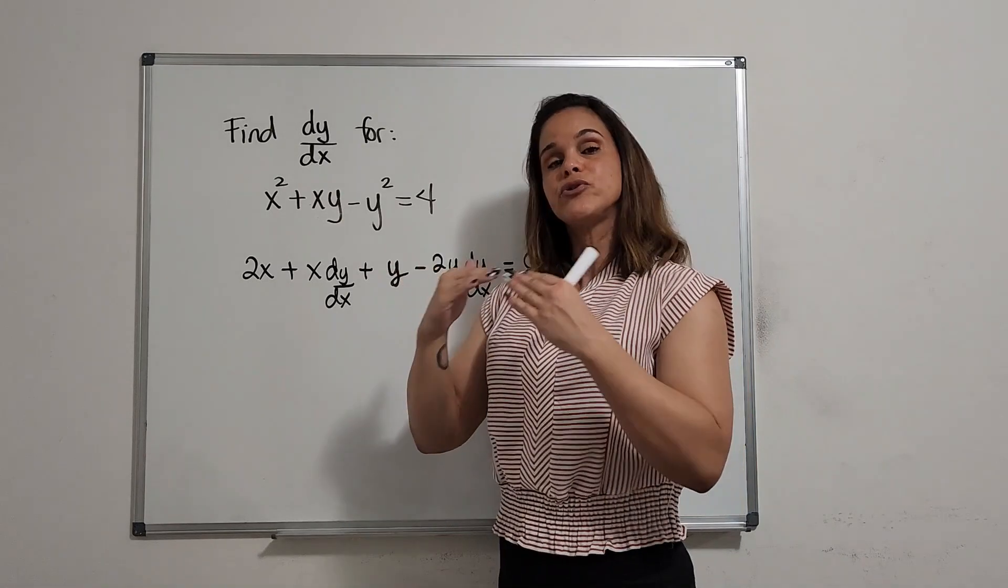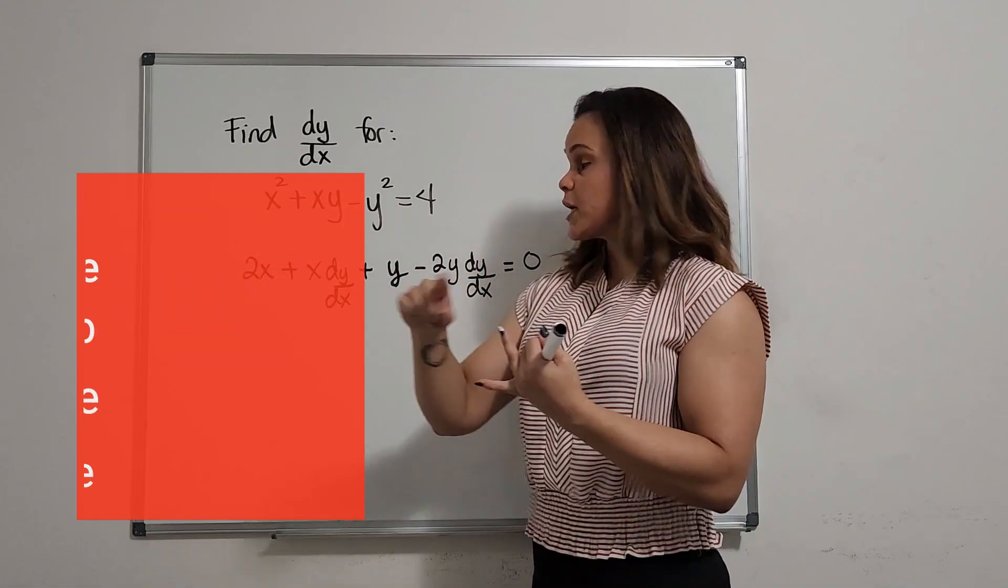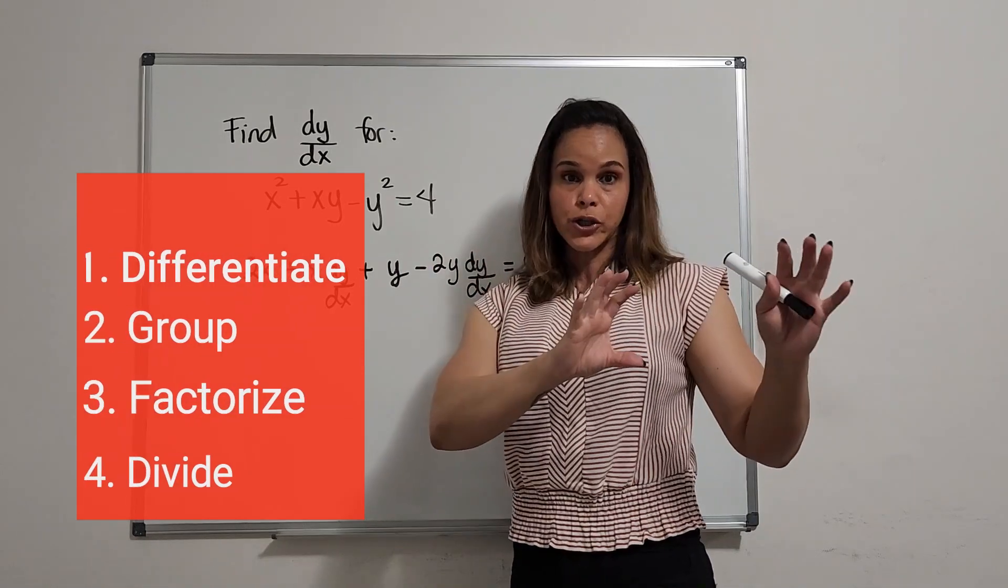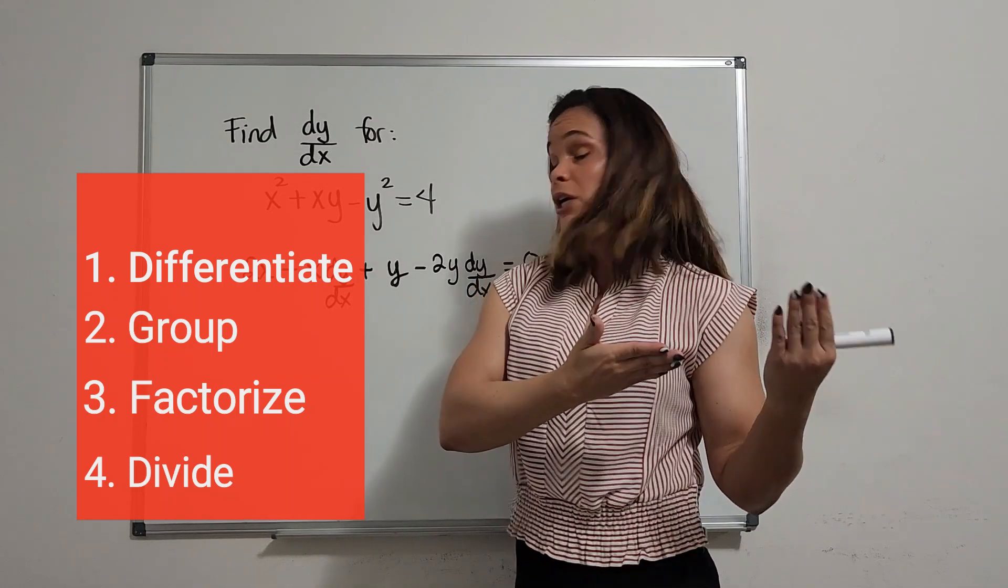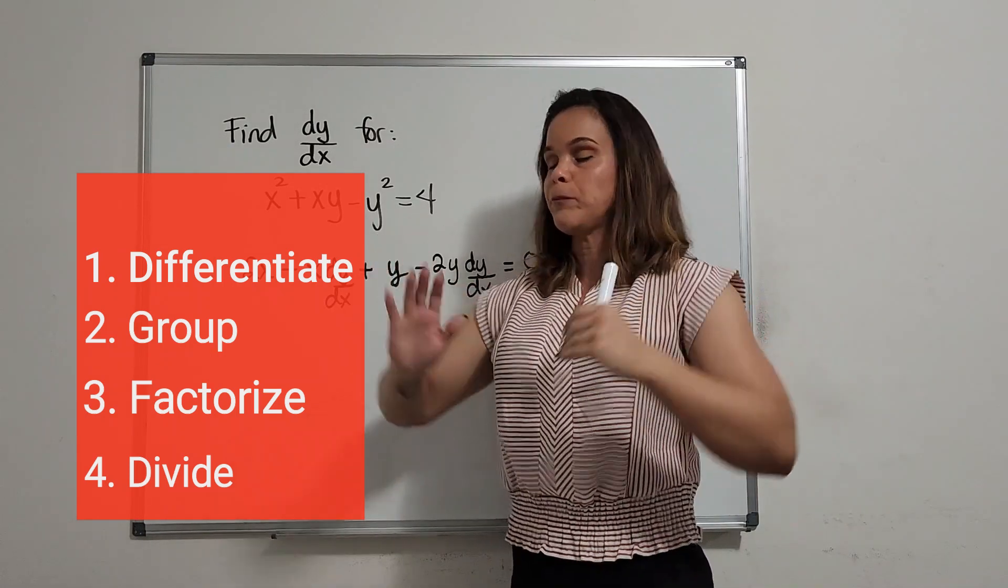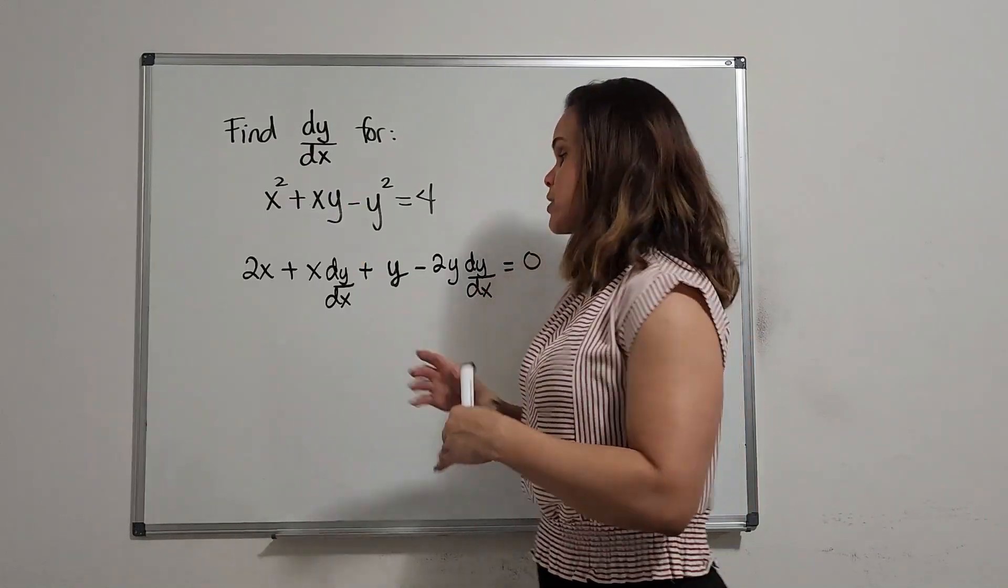I'm going to suggest the following steps. The first step, we differentiate. The second step, we're going to group the like terms. We have some terms that have dy dx and some terms that don't have it, so we're going to group them. Then after that, we're going to factorize and then divide. So let's go ahead and do that.